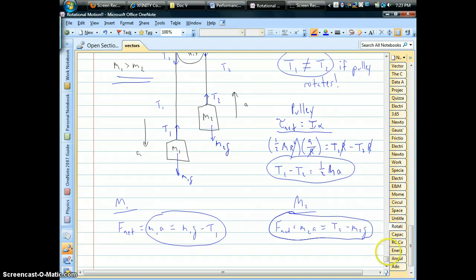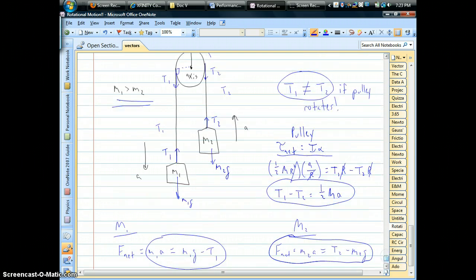We have F equals MA equations for the linear motions of the two blocks. We've got torque equals I alpha for the rotational motion of the pulley. We have two different tensions and that's really the key to this. That's the point that you should take away from this is the tensions on the two sides have to be different. It's the only way you can get a net torque to make the pulley spin in the first place.